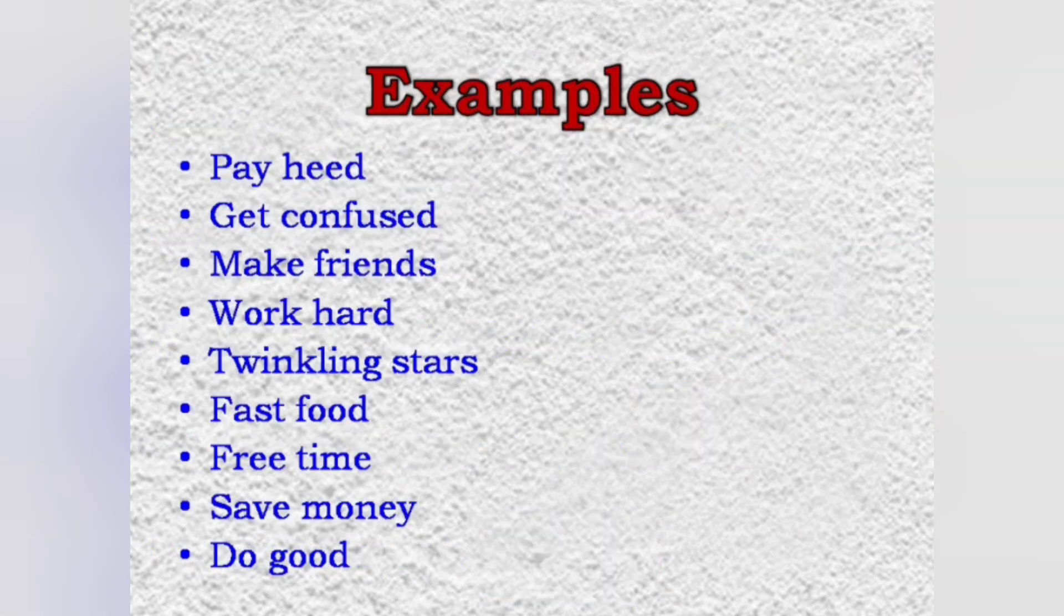Here are a few examples to make you understand how collocations work. Pay heat, get confused, make friends, work hard, twinkling stars, fast food, free time, save money, do good. All these words combine with each other to form a collocation.